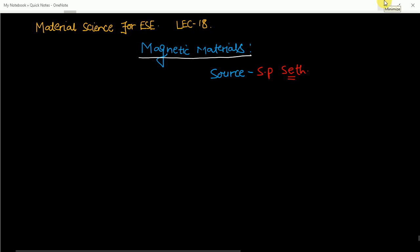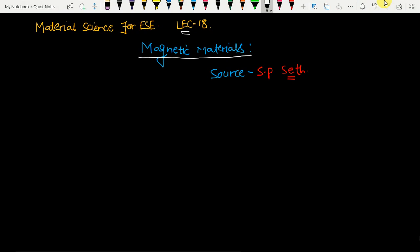Hey guys, this is Amardeep Srivastav. In the previous lecture, I completed the concept of piezoelectric material, ferroelectric material, and different types of concepts related to them. Now in this lecture — lecture number 18 for Material Science Engineering and for Engineering Services Examination — I am going to start a new topic: Magnetic Materials. This topic is very important for prelims, the GS section, the technical section, and you can also expect questions in the mains exam.